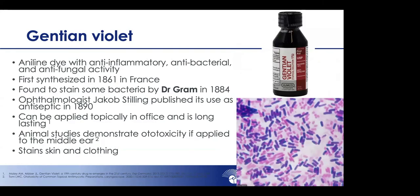Gentian violet has an interesting history — first synthesized in 1861 in France as a dye, it was found to stain certain bacteria and is used in the Gram stain. It was first used as an antiseptic in the 1890s by an ophthalmologist. It can be applied topically in the office and is long-lasting. Animal studies demonstrate significant ototoxicity if applied into the middle ear, so its use with tympanic membrane perforations should be limited. It also stains skin and clothing, and patients should be warned.